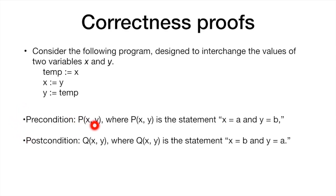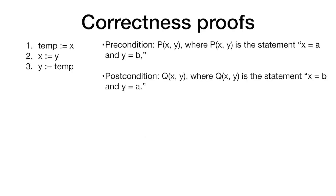We say that a precondition is a predicate P(x, y) where P(x, y) is the statement x equals a and y equals b. This is our precondition. And as a postcondition, we will have another predicate Q(x, y) where Q(x, y) is the statement x equals b and y equals a. So the precondition states x=a and y=b, and the postcondition requires x=b and y=a. Let's see how we can prove that our algorithm is correct from these.